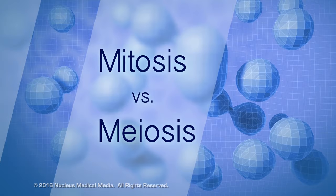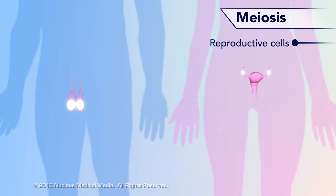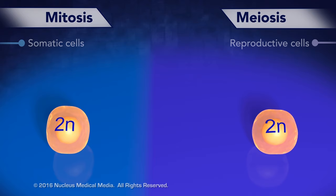Let's compare two types of cell division: mitosis and meiosis. While mitosis occurs all over the body in somatic cells, meiosis only occurs in the reproductive cells of the gonads in order to form gametes.